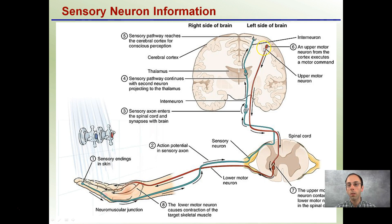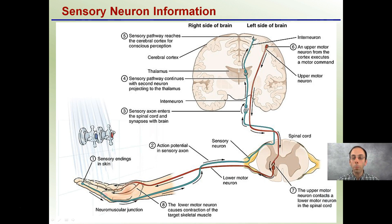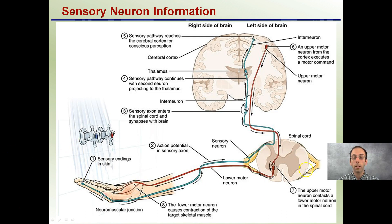An upper motor neuron from the cortex then executes a motor command, leaving the brain and going through the spinal cord. The upper motor neuron contacts a lower motor neuron in the spinal cord through a synapse, ultimately causing contraction of the target skeletal muscles. That contraction will cause the hand to move away — for example, if the water was too hot. While this sounds like many steps, it occurs very quickly. That nerve impulse travels at about 260 miles per hour, so it is a very quick process.